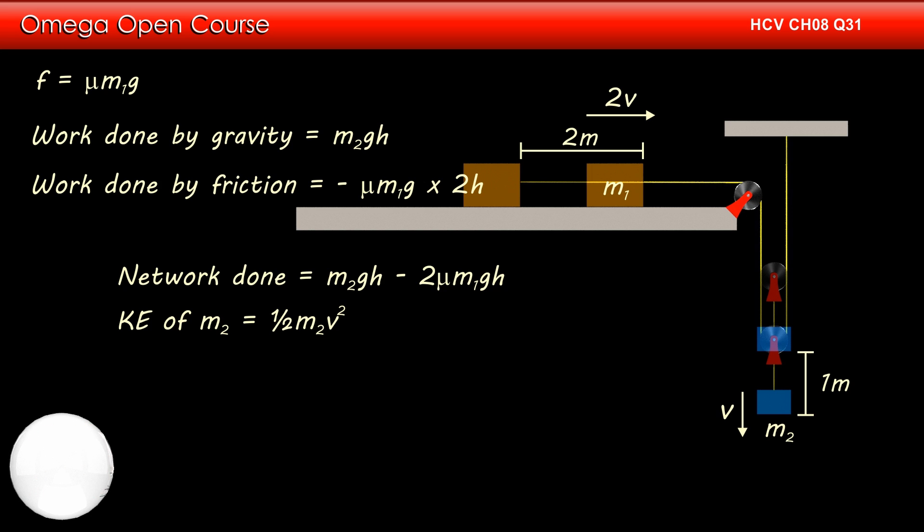If we denote the speed of 1 kg block by v, the speed of 4 kg block is 2v. The kinetic energy of m2 is half m2v square and kinetic energy of m1 is equal to half m1 into 4v square. Therefore, the change in kinetic energy of the system is equal to half m2 plus 4m1 into v square.